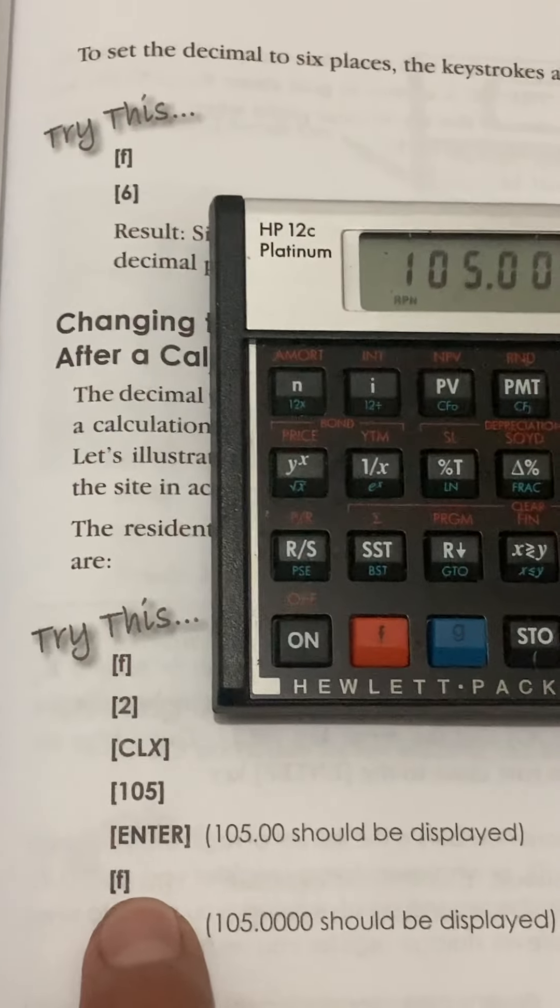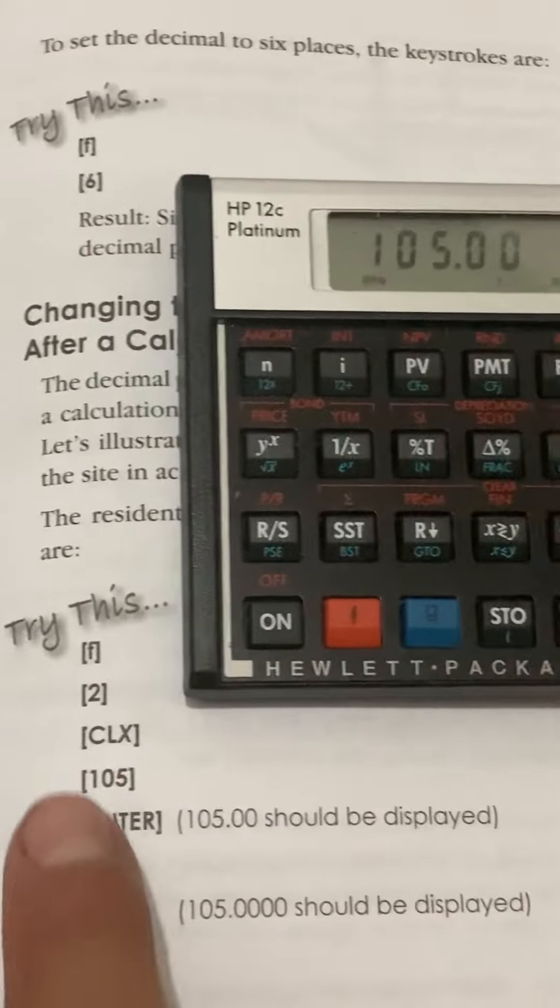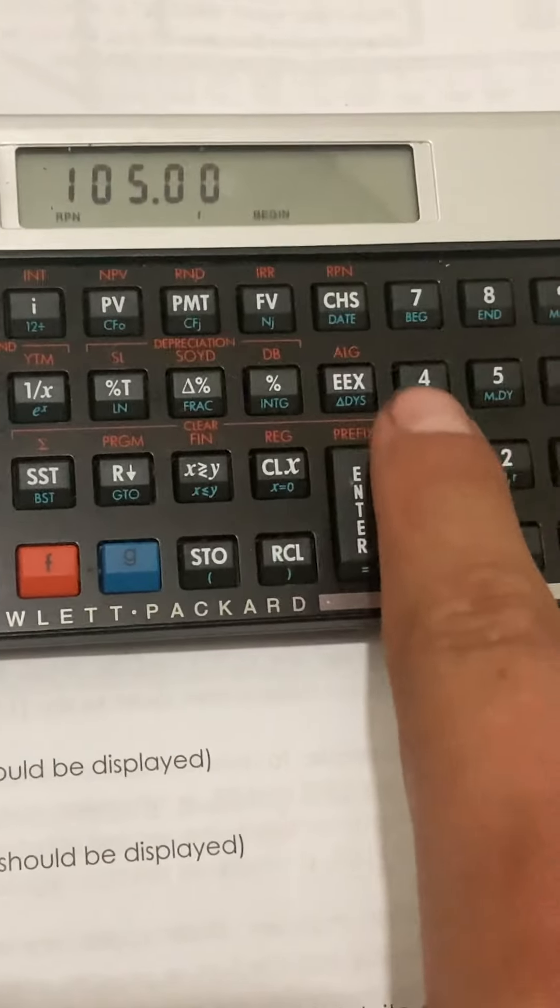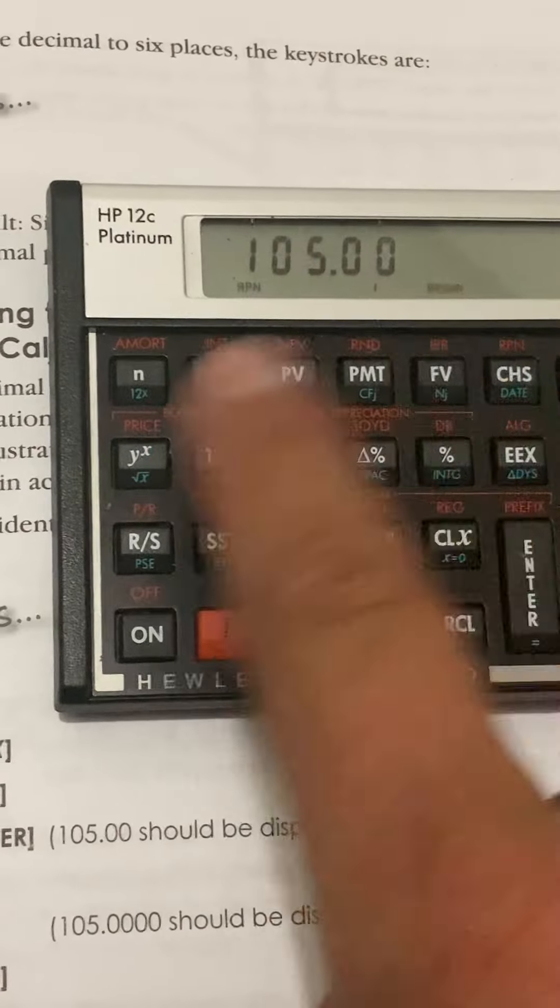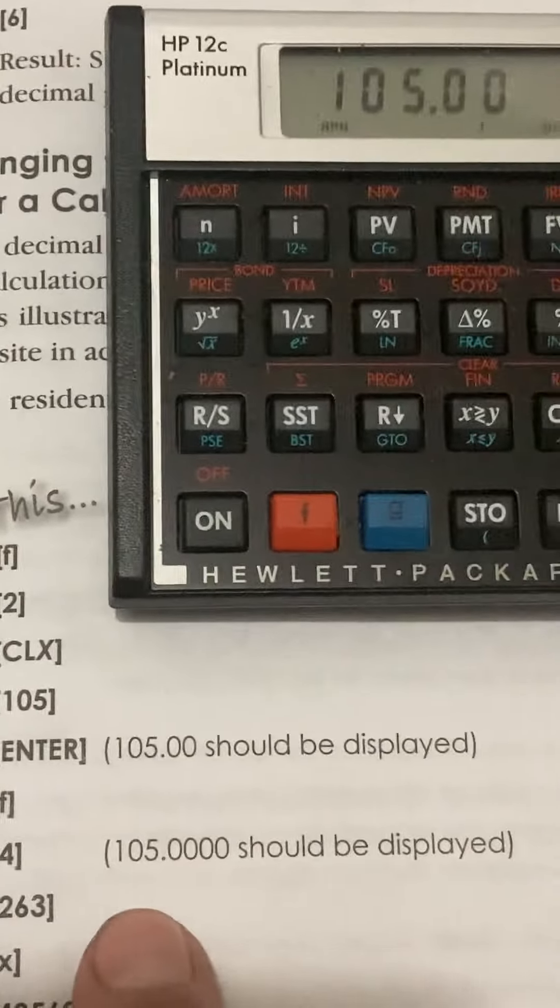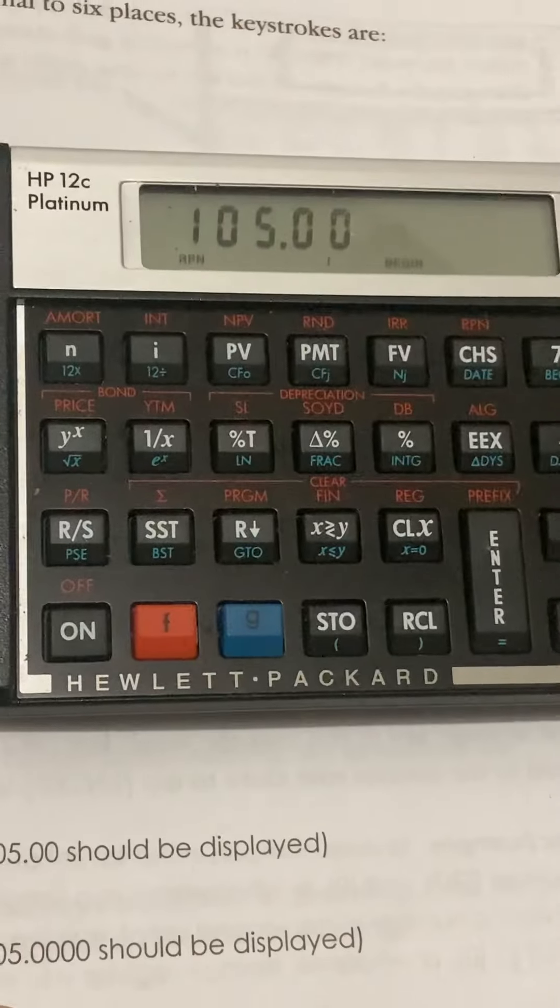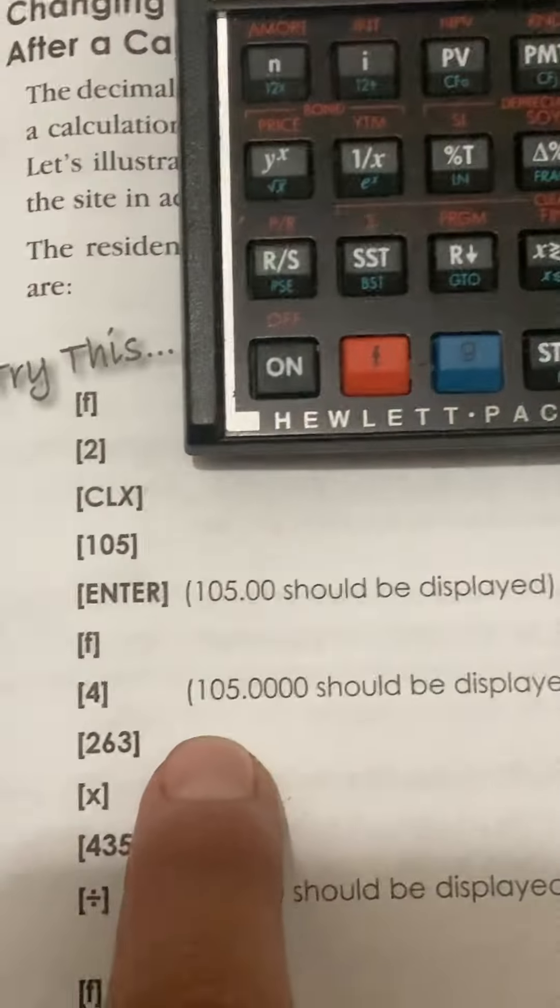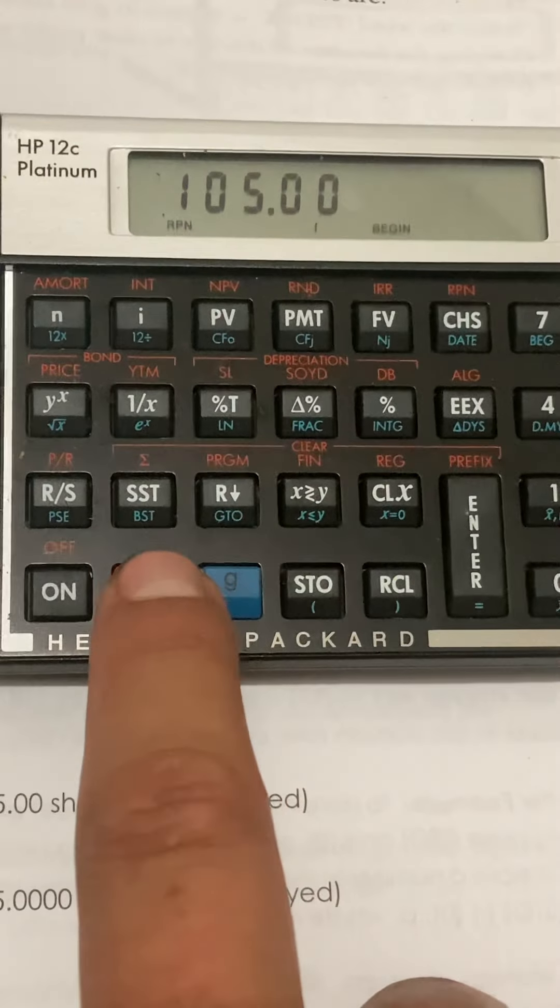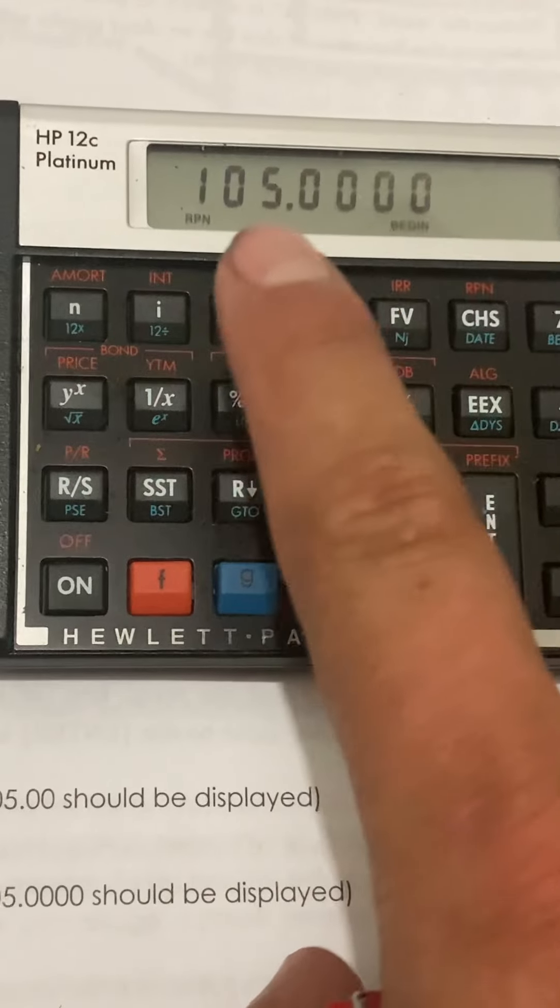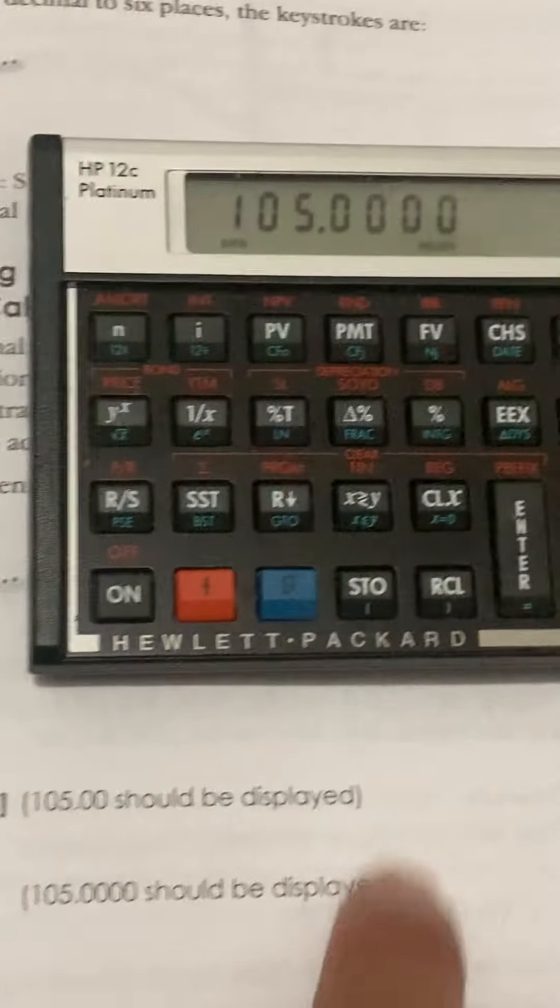Press the F, prefix key. There it is. You see it popped up. Press the number four. When you do it, nothing happens. So don't be looking to see like some kind of change in the calculation. Just a little tip. And then press four. 105.00. 105.40 should be displayed. Now it is.